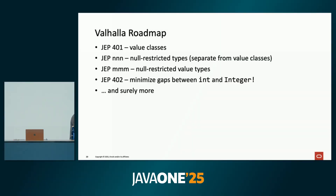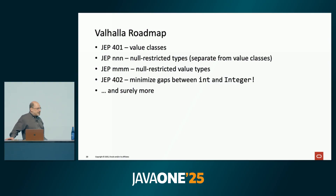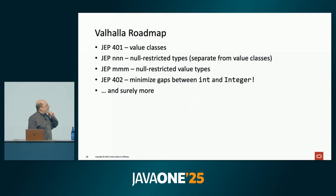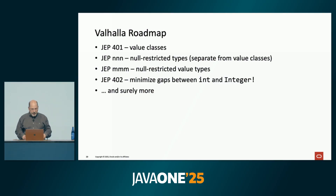Brian is giving off strong 'Valhalla soon' vibes. In his talk about Java's language evolution, he even showed a roadmap — a list of JEP enhancement proposals covering Valhalla's first feature arc in the order he expects them to land. JEP 401 is the first piece: basically value classes. The spec has been stable for over a year; they're just polishing the implementation, and a second early access is coming out fairly soon. Looking further down the road, there are null-restricted types as a concept on their own, null-restricted types in the context of value types with additional interactions and optimizations, and then a cleanup JEP to minimize the gap between legacy primitives and the null-restricted variant of their box types. And these are surely not going to be the only four JEPs.